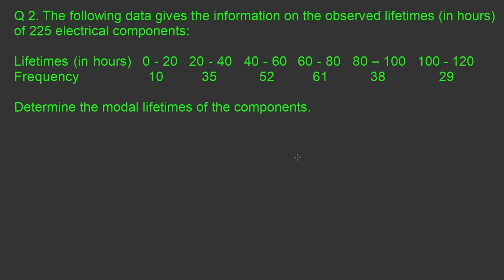Question number 2 in the exercise: the following data gives information on the observed lifetimes in hours of 225 electrical components. Determine the modal lifetime of the components. We know the formula for mode of grouped data is equal to L plus F1 minus F0, divided by 2F1 minus F0 minus F2, into H, where L is the lower limit of the modal class, F1 is the frequency of the modal class, F0 is the frequency of the class preceding the modal class, F2 is the frequency of the class succeeding the modal class, and H is the class size or class width.